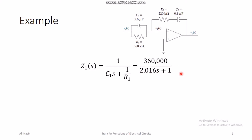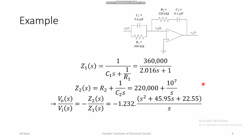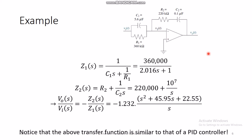For any more complicated series or parallel combination you can still use standard circuit analysis skills. Z₂ is a series combination, so we add the impedances of R₂ and C₂ to get the expression for Z₂. Finally, V_out over V_in equals Z₂ over Z₁, and when we take that ratio and multiply things out, we get the transfer function for this op-amp circuit.